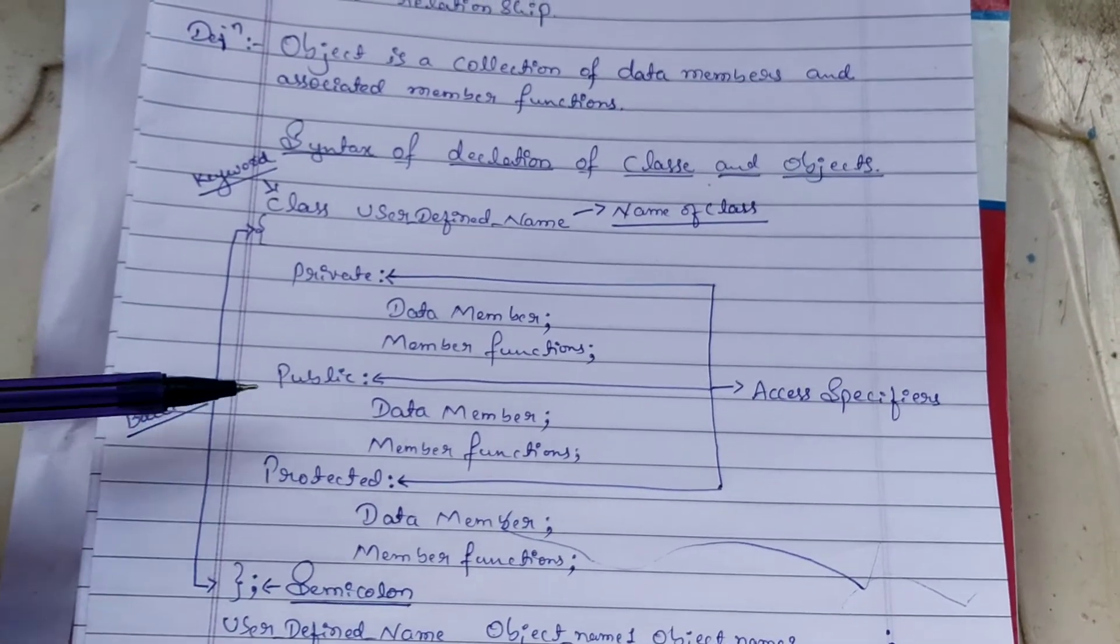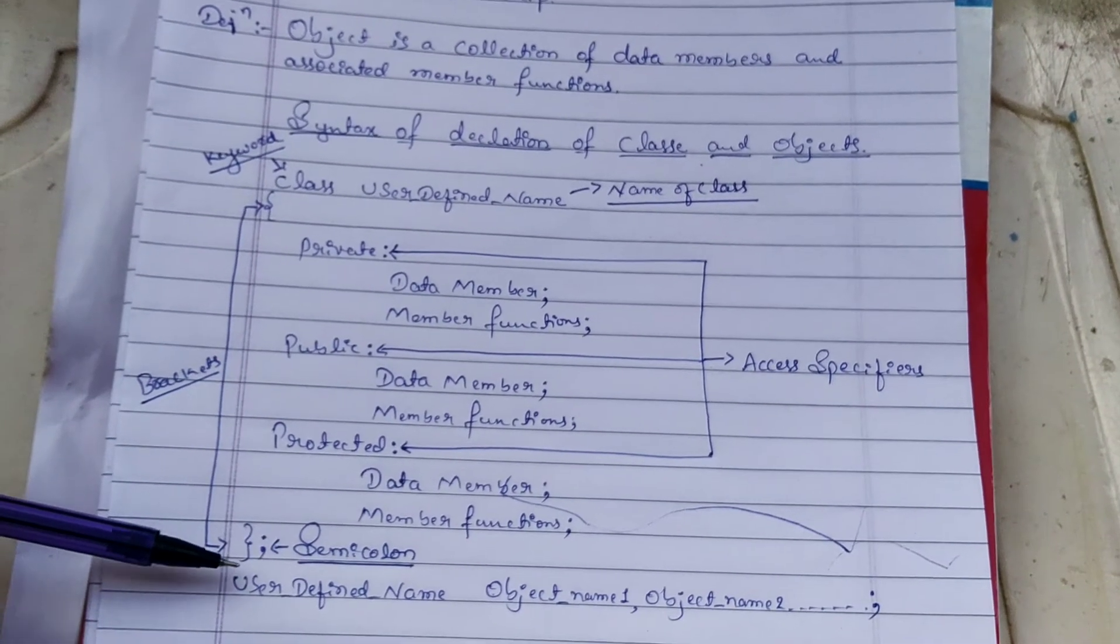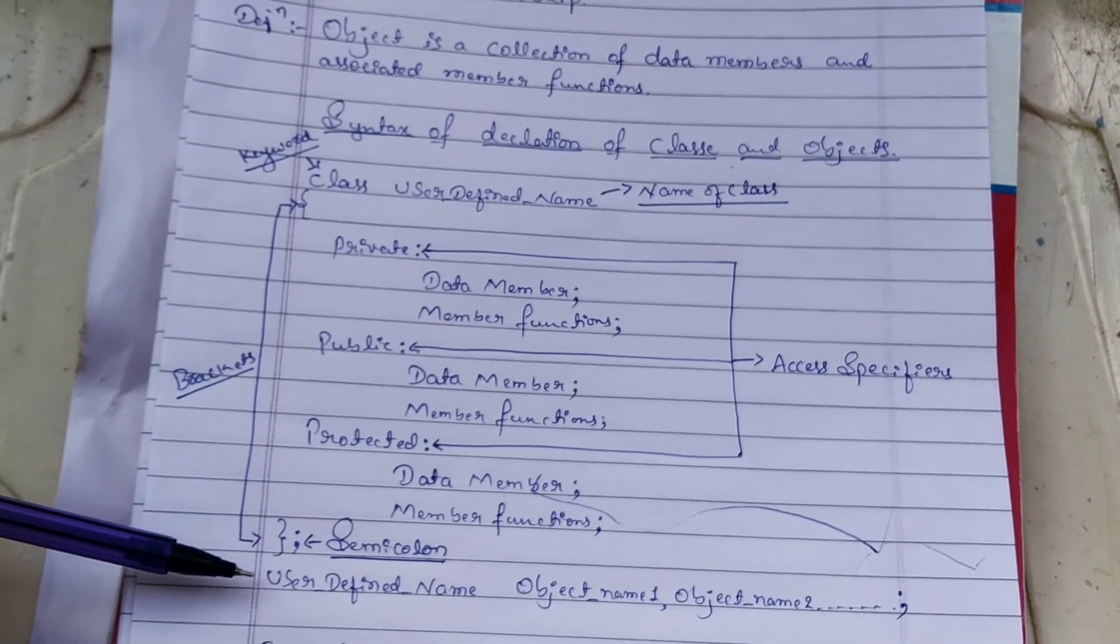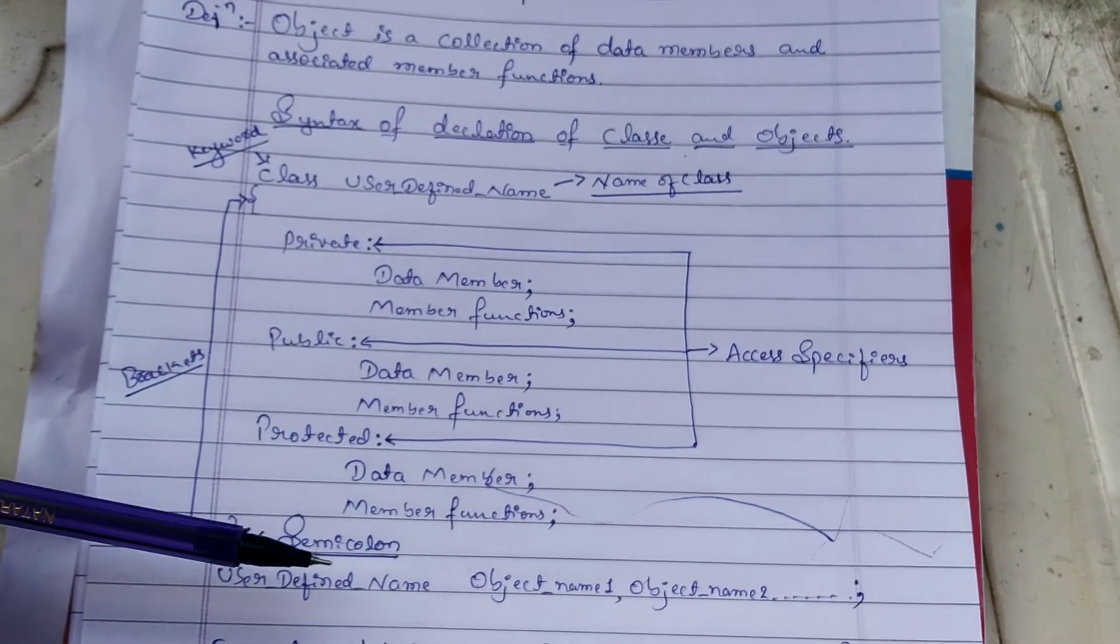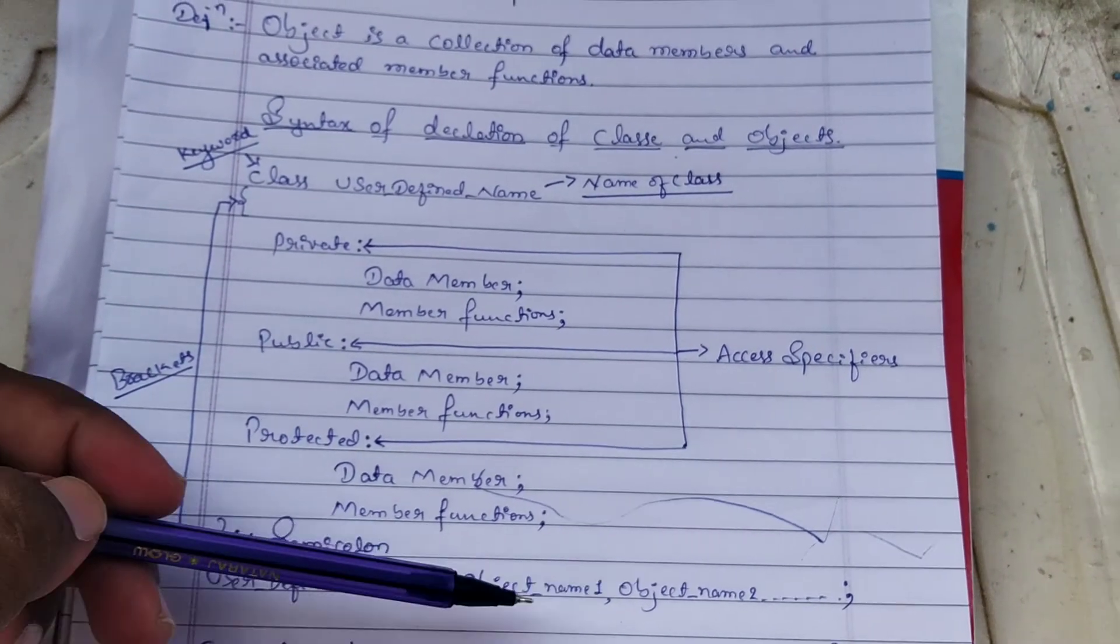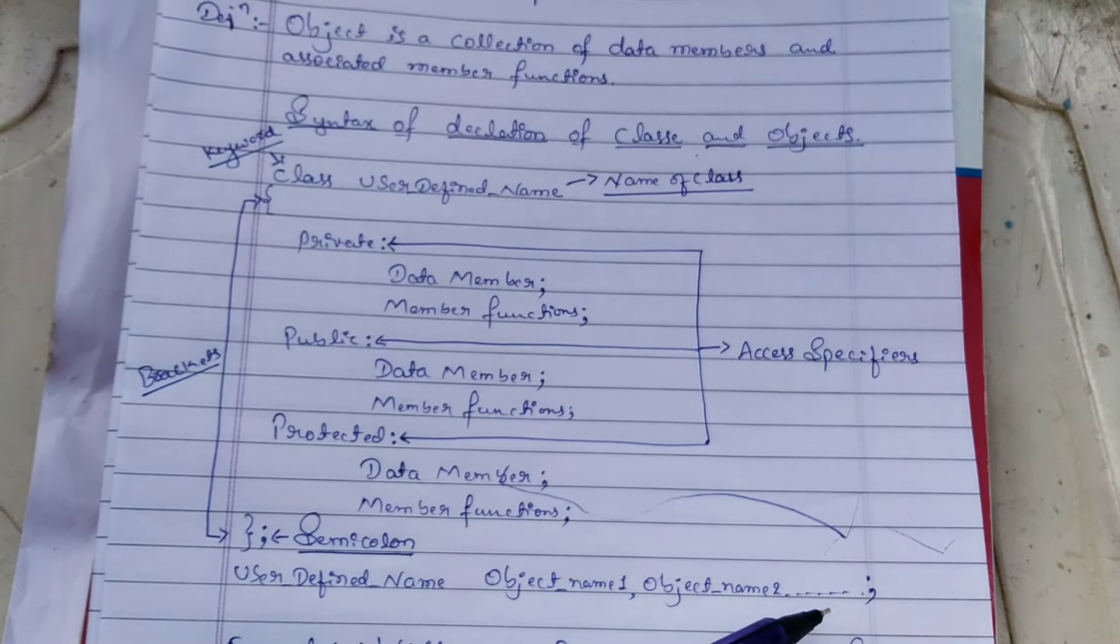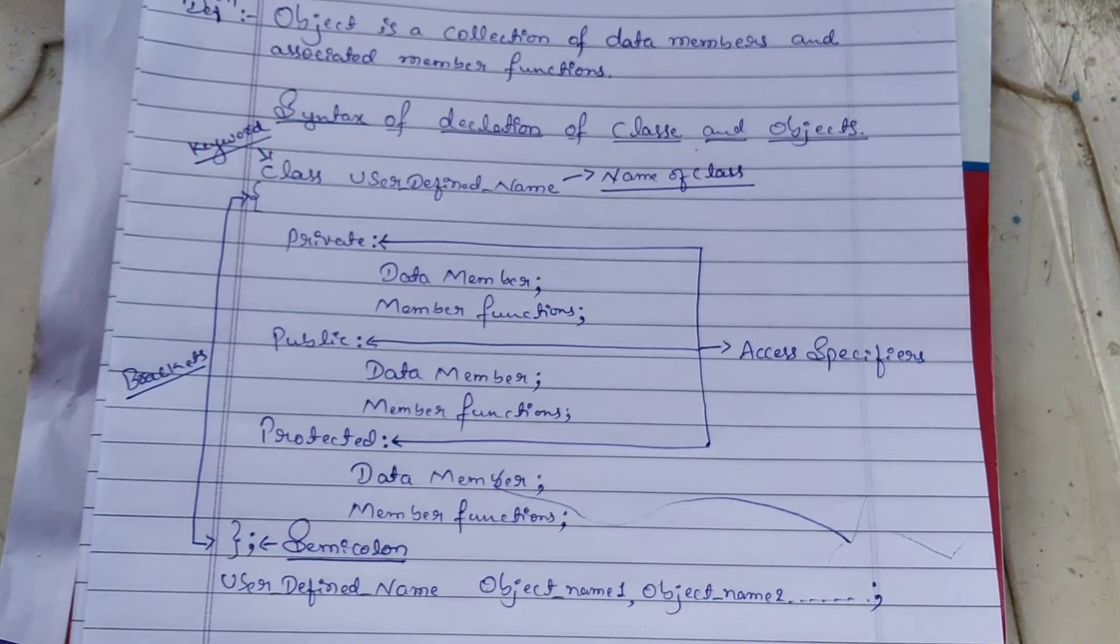Lastly, after the semicolon, we write the user-defined names like object_name1 and object_name2 to create the objects. This is the main syntax for declaration of classes and objects.